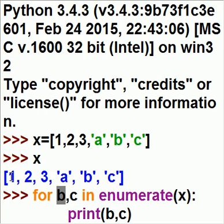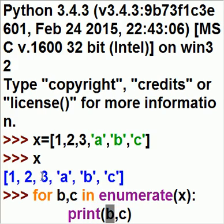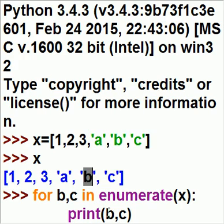It'll initialize B with 0, and then automatically increment it with each printout. So you get 0 and 1, then 1 and 2, then 2 and 3, then 3 and A, then 4 and B, then 5 and C, like that.